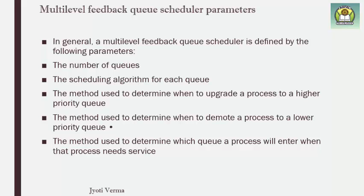The main difference between multi-level queue scheduling and multi-level feedback queue scheduling is that in multi-level queue scheduling, processes never change queues — they never migrate among queues. But in multi-level feedback queue scheduling, processes are allowed to migrate between queues. This is all for the CPU scheduling algorithm.